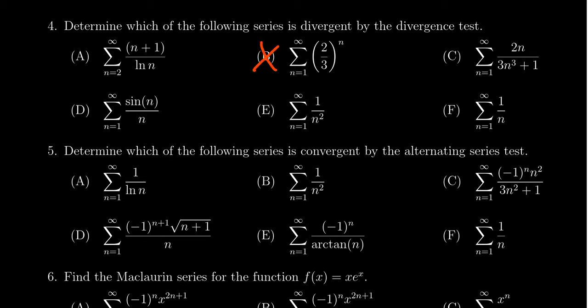On the next one, you have 2n over 3n cubed plus 1. Notice that this thing is bottom heavy. As n goes to infinity, this sequence will go to zero. So whether it's convergent or not, it doesn't matter. The divergence test wouldn't apply here.